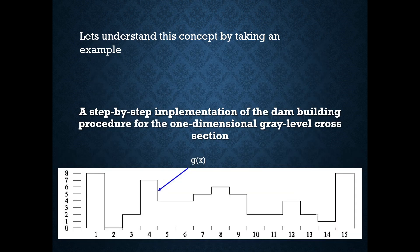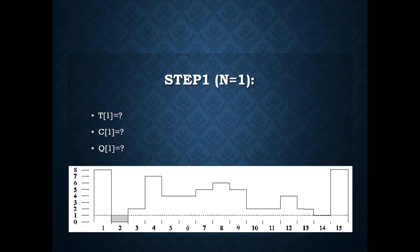Let's understand this morphological watershed and dam construction by taking an example. We here implement a step-by-step implementation of the dam building procedure for the one-dimensional gray level cross section. We take this as g of x.